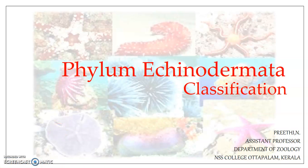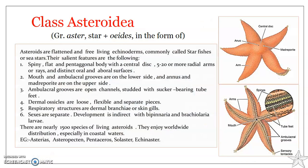Welcome back. We'll be discussing the classification of Phylum Echinodermata, specifically looking into the features of Class Asteroidea. One example is Asteroidea — the sea stars or starfishes. They often live on hard substrates in marine environments, and some species live in sandy or muddy substrates.